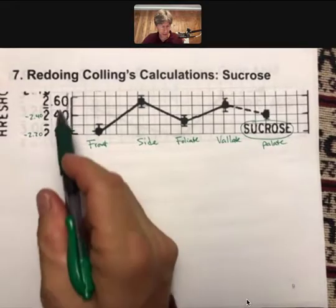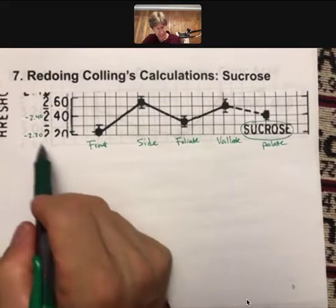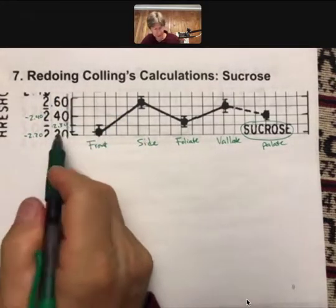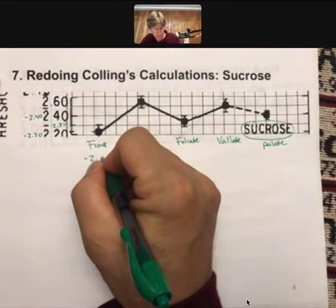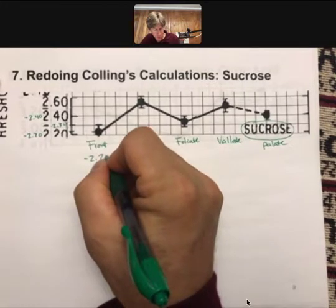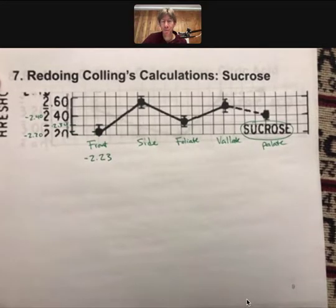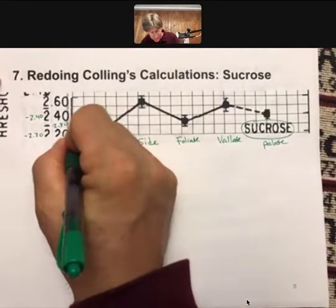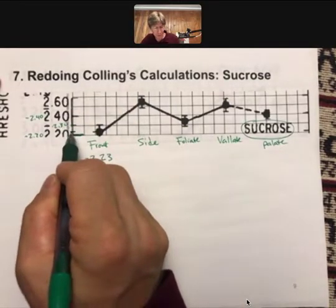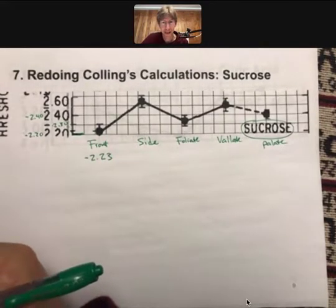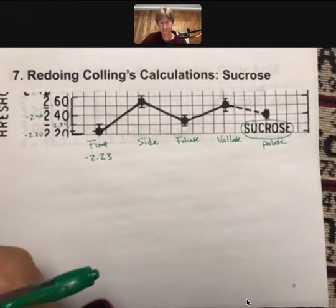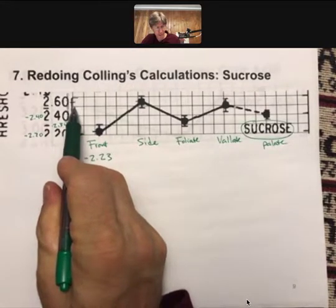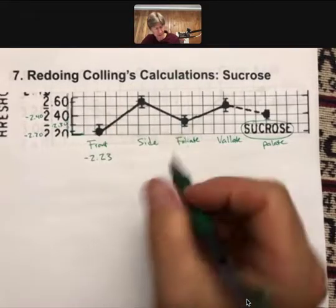This one here is probably about 2.30, so I'm going to call that minus 2.23. It's an estimate — you could do minus 2.24. The key is if this line is minus 2.22 and this is minus 2.30, then that point is somewhere between them, roughly a third of the way in. This next one: 2.3, 2.4, 2.5 — this one is halfway between 2.5 and 2.6, so that's going to be minus 2.55.